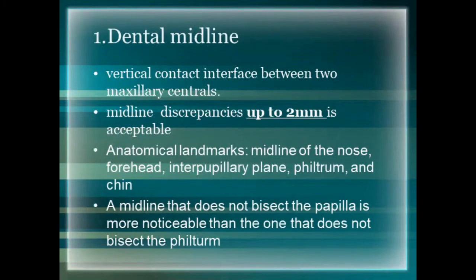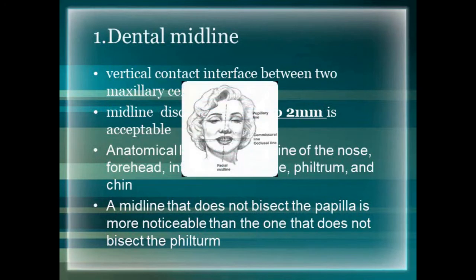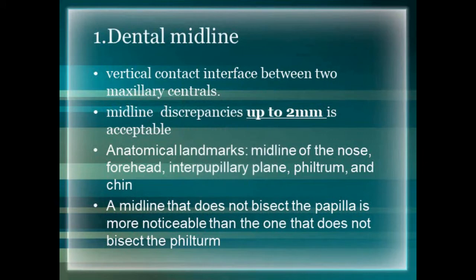The first tooth component is the dental midline. It is the vertical contact interface between two maxillary centrals. In our previous session we said that the interpupillary line should be perpendicular to the facial midline and parallel to the occlusal plane. Similarly, the facial midline and the dental midline should be parallel, and the dental midline should be perpendicular to the interpupillary line. As long as the dental midline is perpendicular to the interpupillary line and parallel to the facial midline, discrepancies up to 2 mm are acceptable.